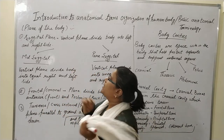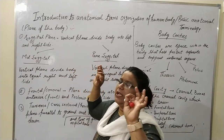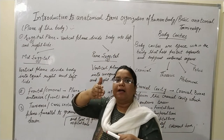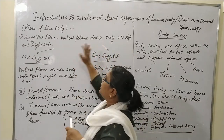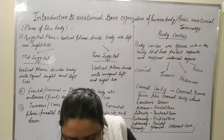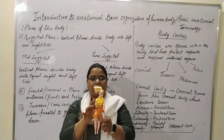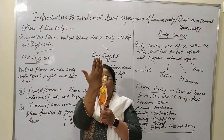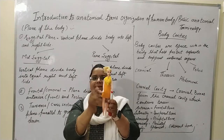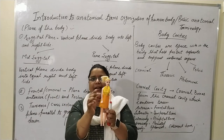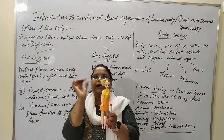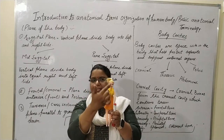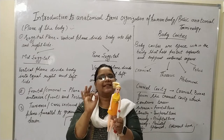First of all, we will discuss the sagittal plane. The sagittal plane is a vertical plane. We divide the body from left and right. This is my daughter's doll — I am taking it here. If we talk about the sagittal plane, the plane will remain like this and we divide the body from left and right. That is the sagittal plane.